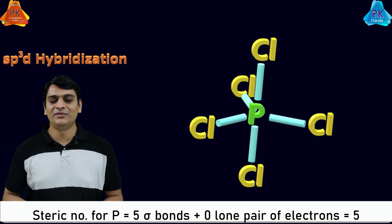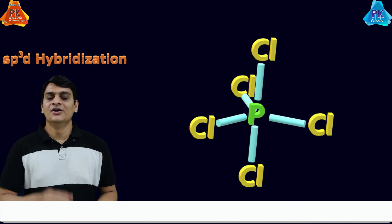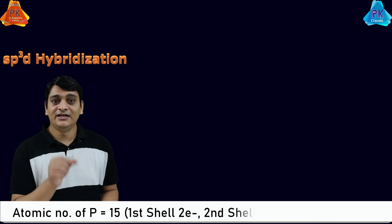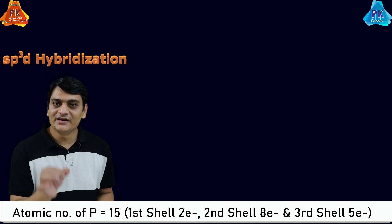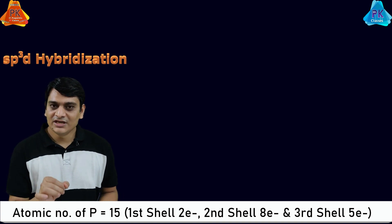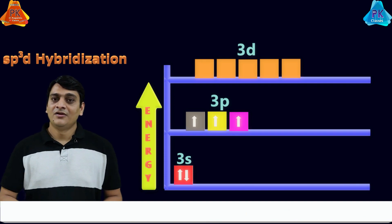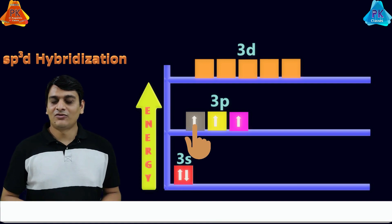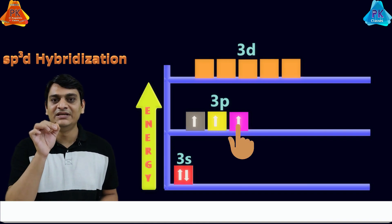Five orbitals are involved: one s orbital, three p orbitals, and one d orbital — one plus three plus one equals five. The central atom is phosphorus with atomic number 15, containing two electrons in the first shell, eight in the second, and five in the third shell. The valence shell is the third shell, which in the ground state contains two electrons in the 3s orbital and one electron each in 3px, 3py, and 3pz.